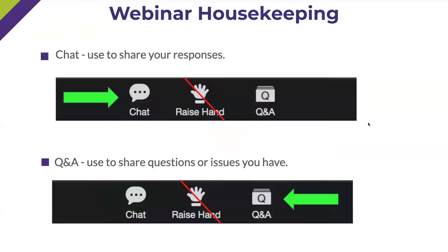So first, just a quick housekeeping note in case you haven't used Zoom. There are two elements of Zoom that we like to use in the webinar. The first one is the chat. If you search for that on your bar, it should be in the black bar. When you open the chat, it'll default to saying 'to all panelists' — you can also do 'to all panelists and attendees.' You're going to use this chat box to share responses to questions throughout the webinar.